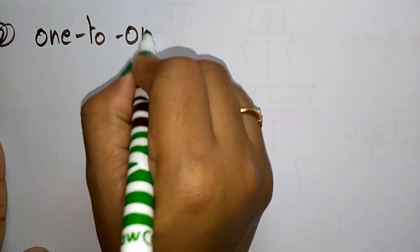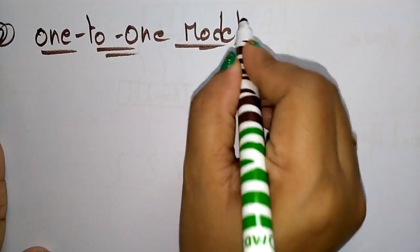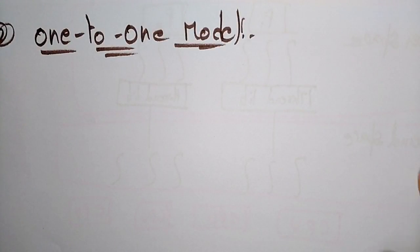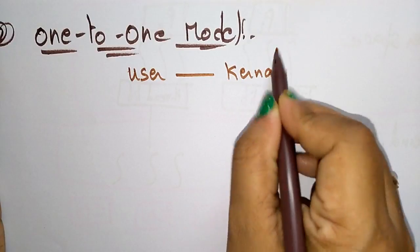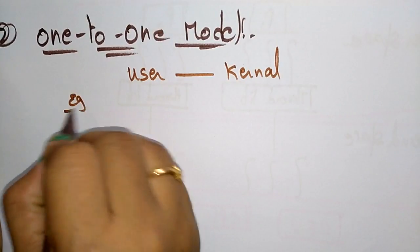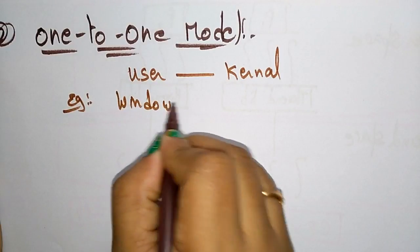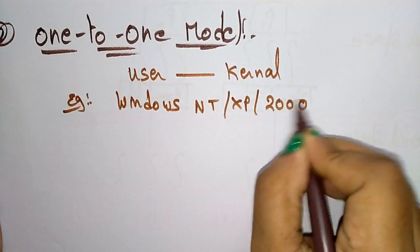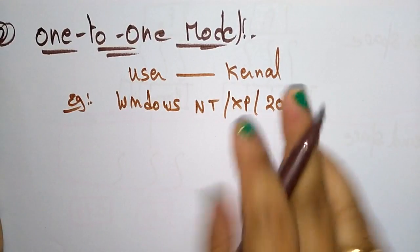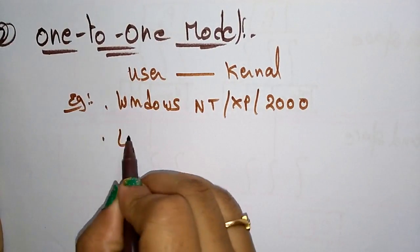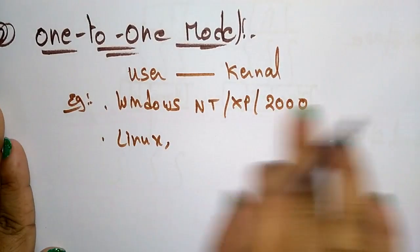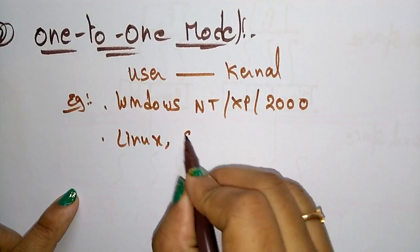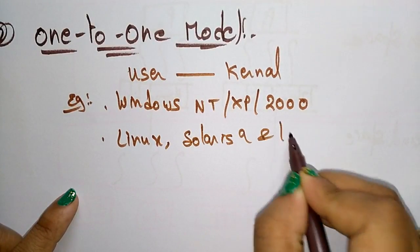Now coming to the next concept — that is the one-to-one model. The name itself says it: each user-level thread maps to one kernel thread. Examples include Windows XP, Windows 2000, Linux, and Solaris 9 and later versions — all these operating systems follow the one-to-one model.